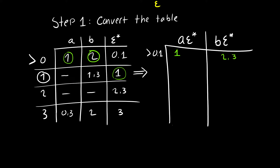At state one, when we get a B, we go to one and three. But we need to follow epsilon-star: go to one, epsilon-star is one; go to three, epsilon-star is three. So that's {1,3}. But wait — from state two on B we get nothing, and that gives us a combined transition. Including all states, the B transition from {0,1} becomes {1,2,3}. Any time we get a new state, we add it to the left side of the table. So we have new state {1,2,3} to process.